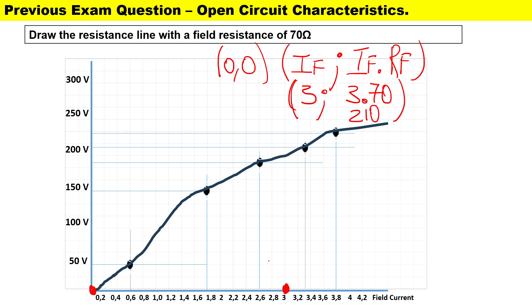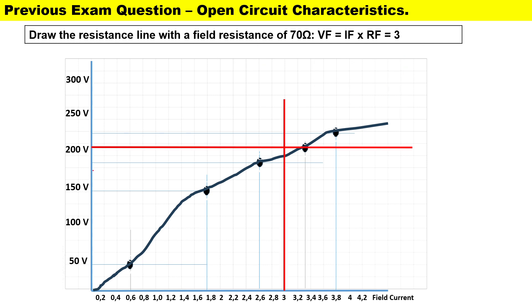We're going to plot at 3 and about 210. Right about 210 and 3 where they intercept one another, that will be our second plot. Our first plot is at zero and zero, then we can draw a straight line through there and that will give us our resistance line.